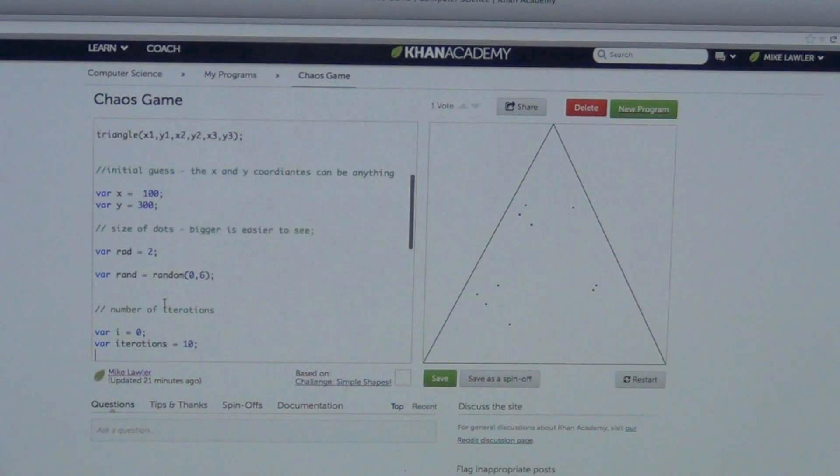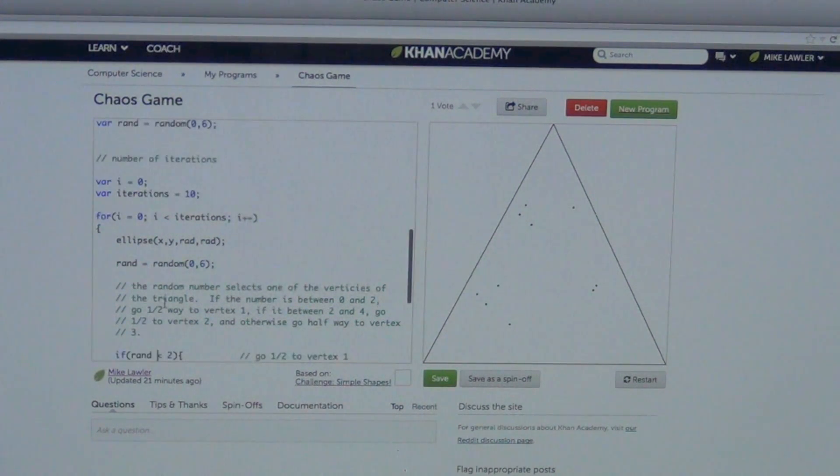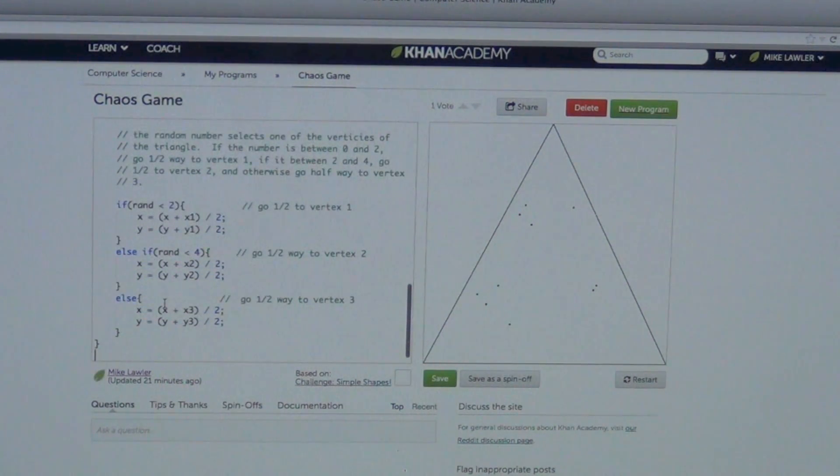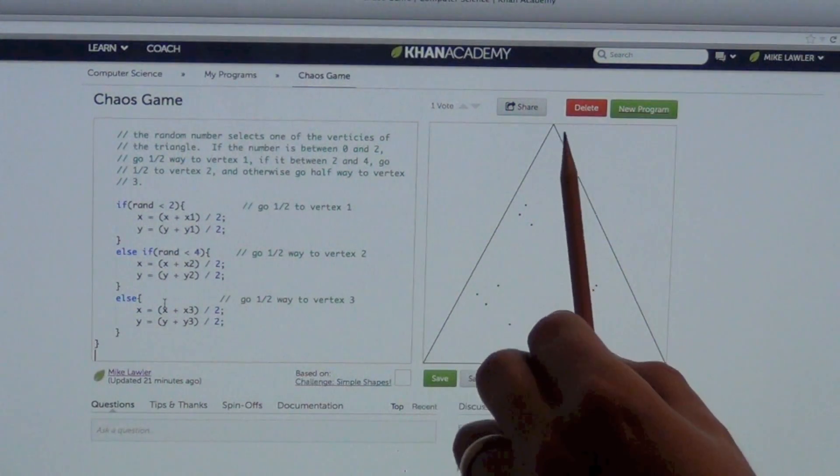I made the dots have a radius of 2 so they're a little bit easier to see. And then what we do, and this is all we do, and I've made 10 iterations. You can see 10 dots on the screen. All we do is I draw the dots. That's what ellipse, x, y, radius, radius means. Then I take a random number between 0 and 6. Just pick a random number. If that random number is between 0 and 2, wherever dot I'm at, I go halfway to the first point, first vertex.